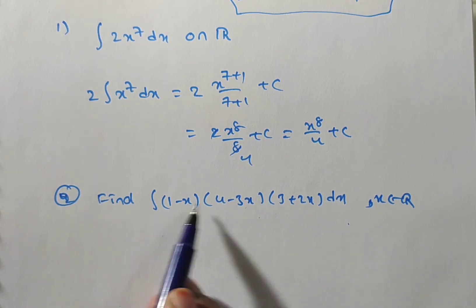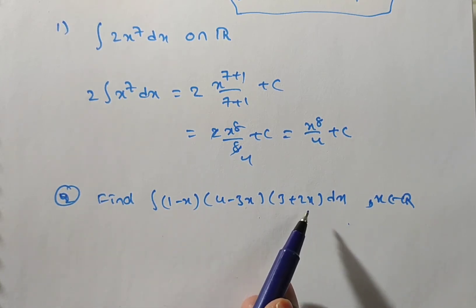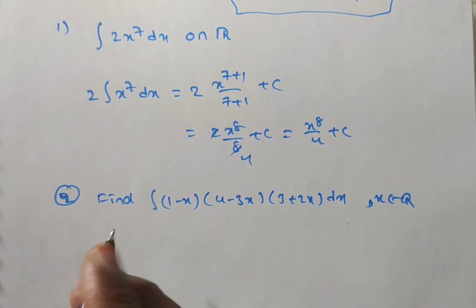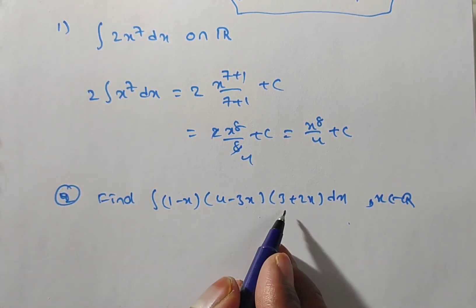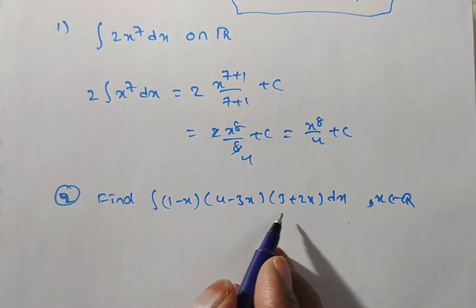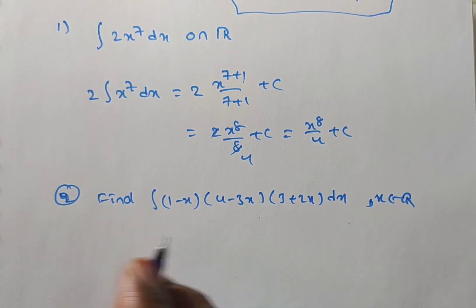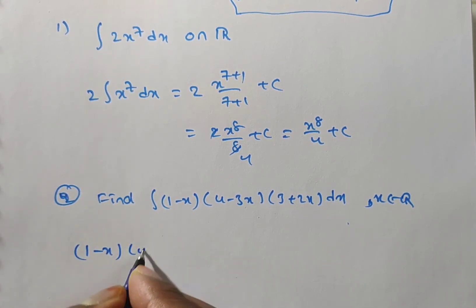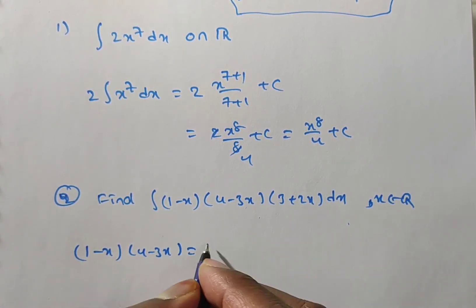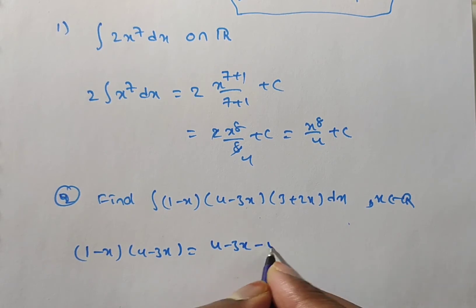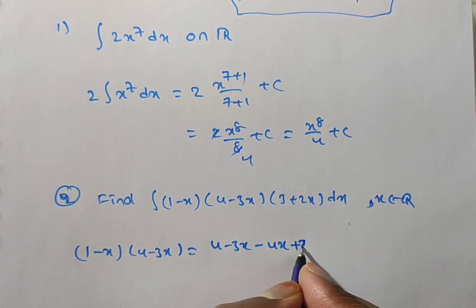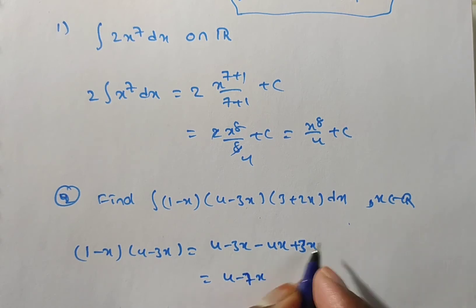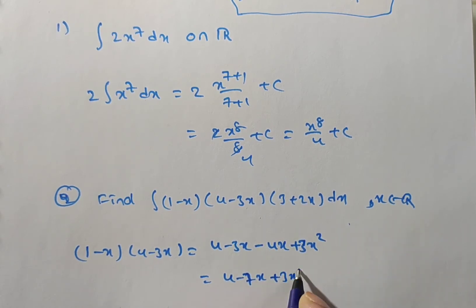Each factor has x power 1, so the maximum degree you will get is a cubic polynomial. First we multiply the first two factors: (1 minus x)(4 minus 3x) equals 4 minus 3x minus 4x plus 3x squared, which gives 4 minus 7x plus 3x squared.